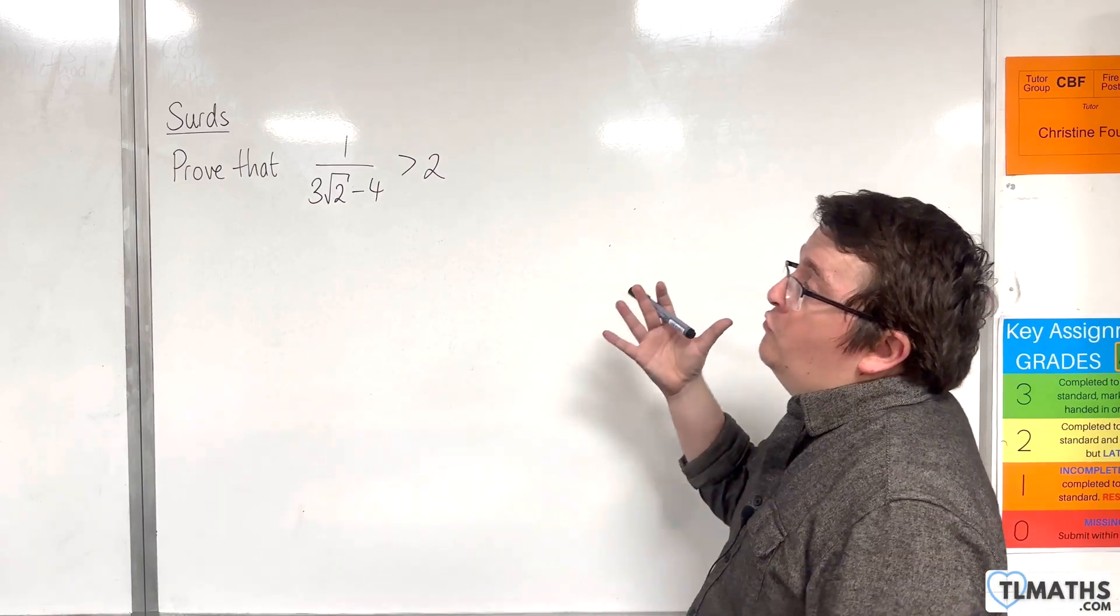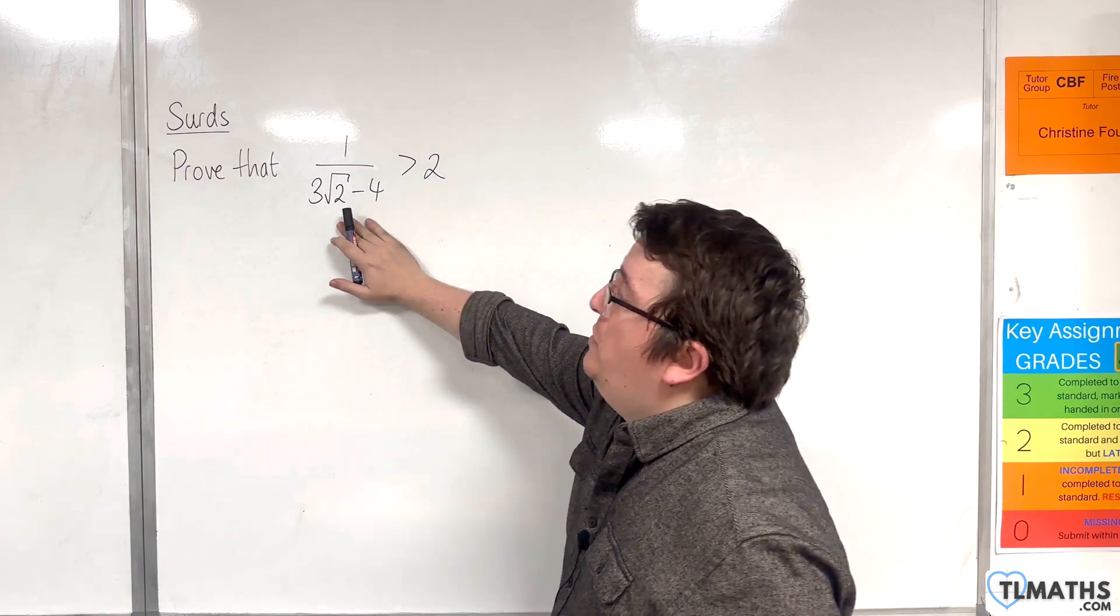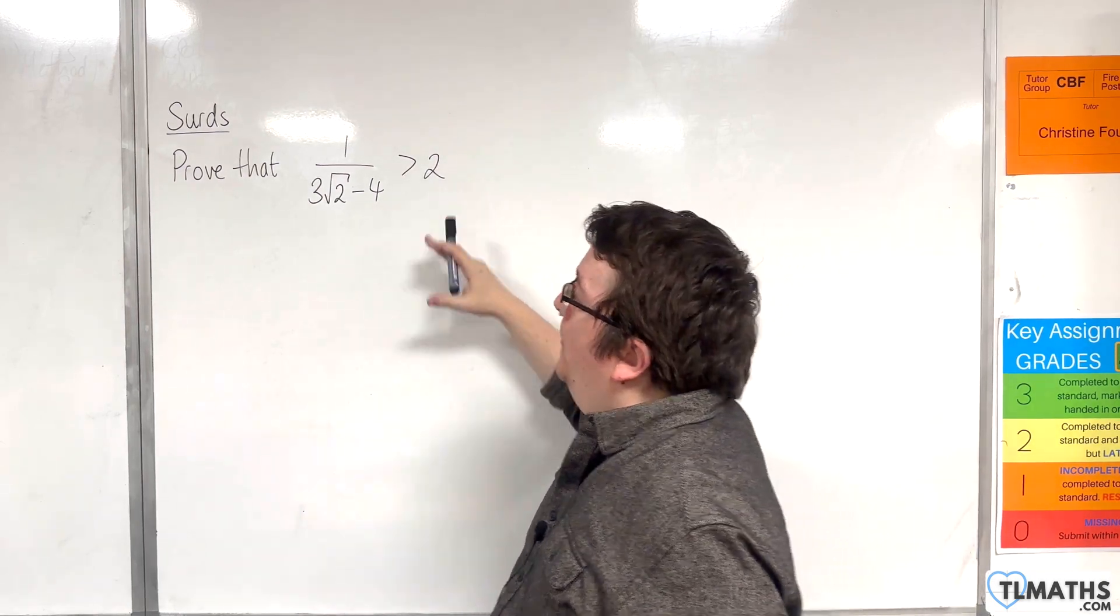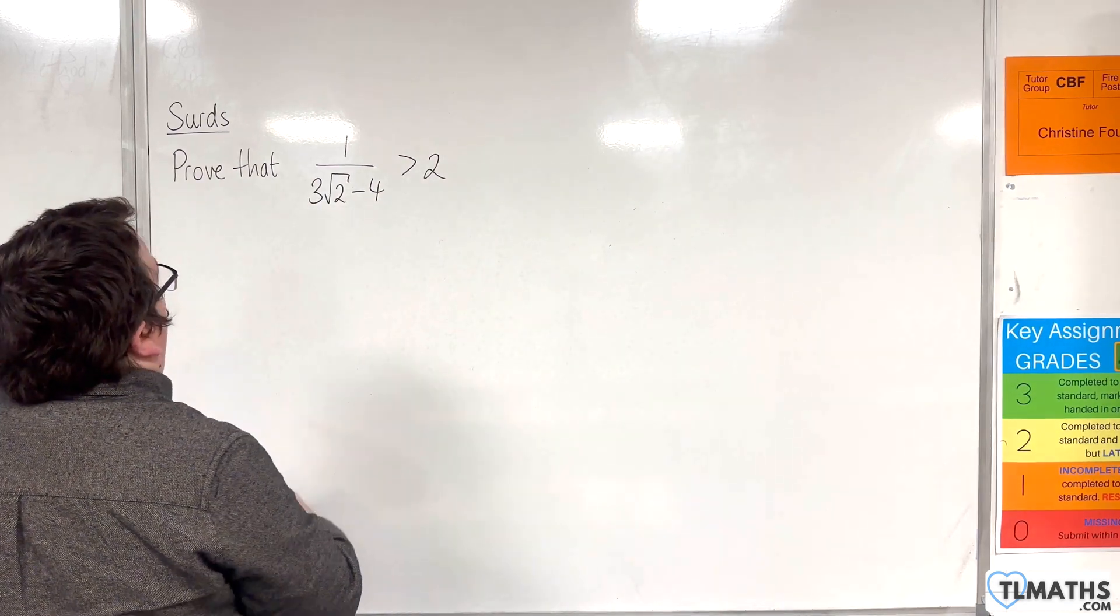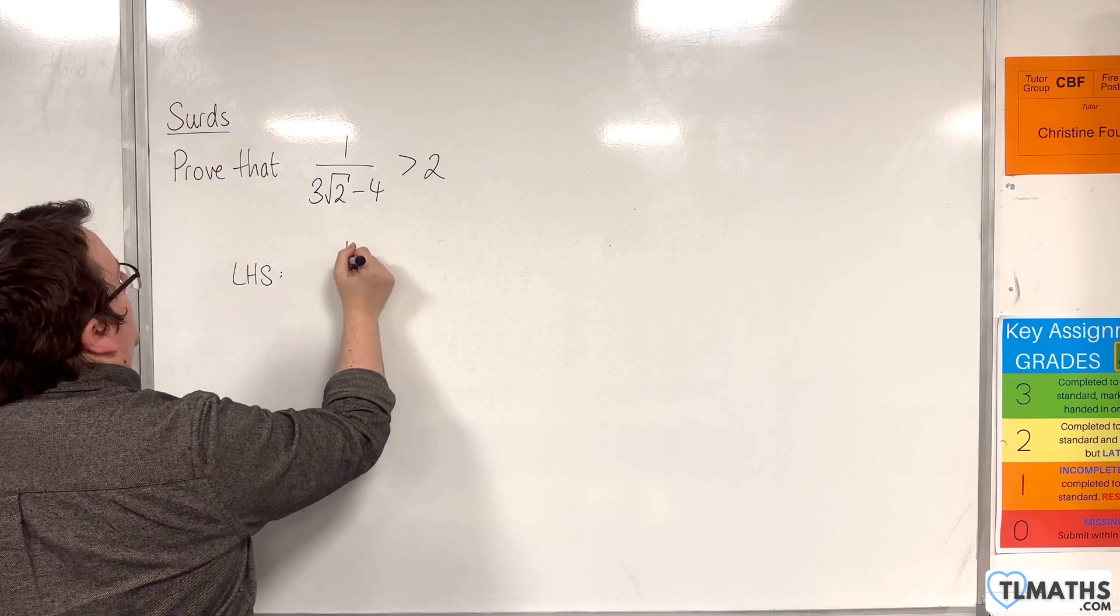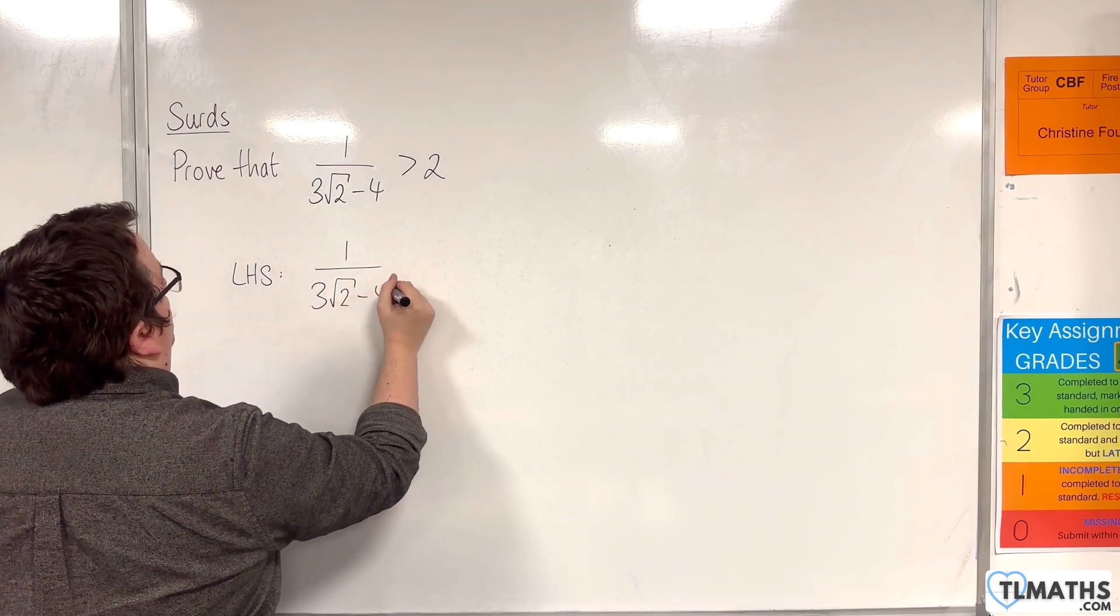In this example, we need to prove that 1 over 3 root 2 take away 4 is greater than 2. I'm going to look at the left-hand side of this inequality, the 1 over 3 root 2 take away 4.